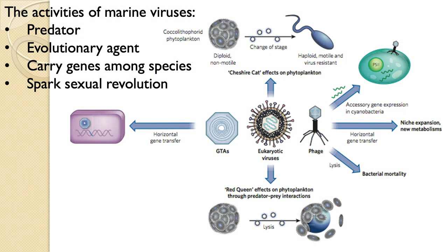I want to talk a little bit about the relationships among viruses and bacteria because it's a pretty special predator-prey relationship. In particular, the way viruses get into microbes is by attaching to receptors on the outside of those cells. The viruses have to have very specific kinds of abilities to attach to those receptors.